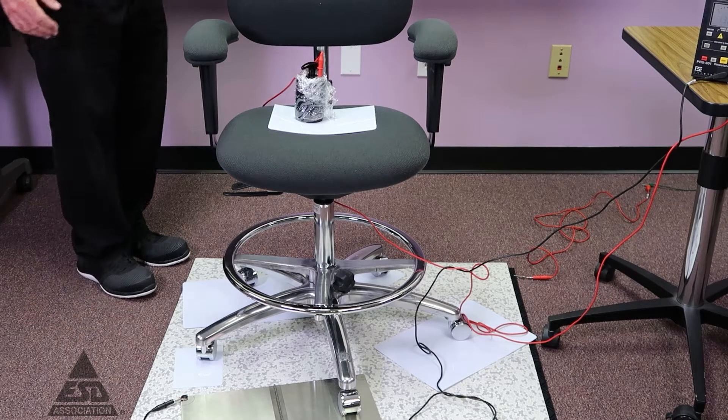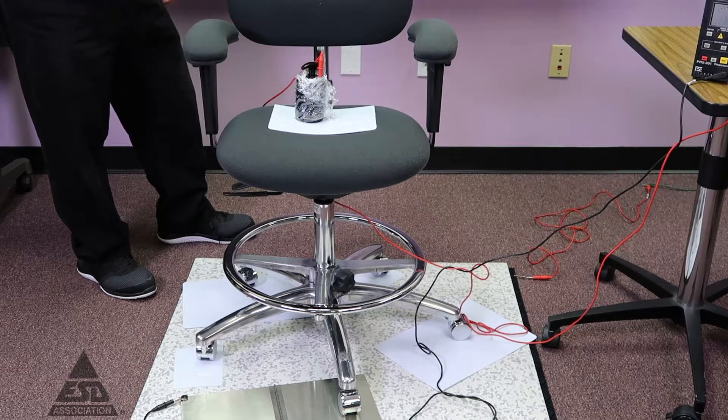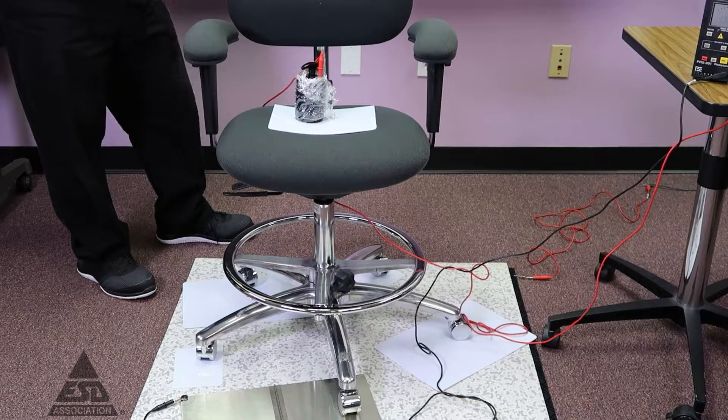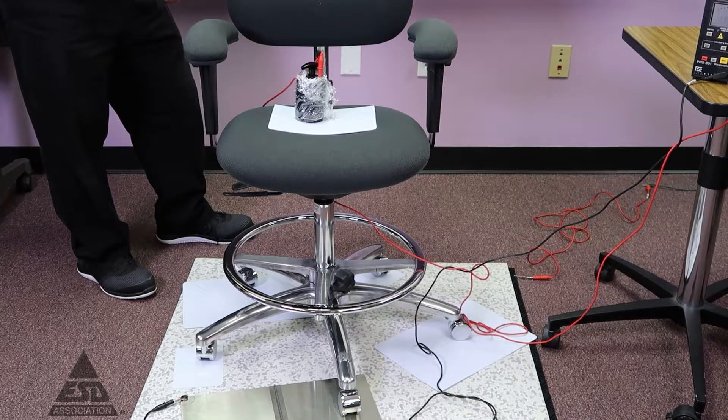Here we're going to measure seating. Seating again has two components: product qualification and compliance verification. We'll start with product qualification, and again this should be done in a humidity controlled environment of 23 degrees Celsius and 12% relative humidity.